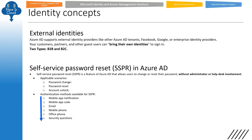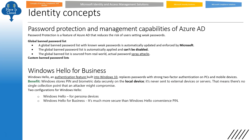Self-service password reset (SSPR) in Azure AD — applicable scenarios: password change, password reset, account unlock — remember these three. Authentication methods available for SSPR: mobile app, mobile app code, email, mobile phone, office phone, security question. Password protection is used to reduce the risk of users setting weak passwords. There are two lists: a global banned password list maintained by Microsoft, and a custom banned password list.